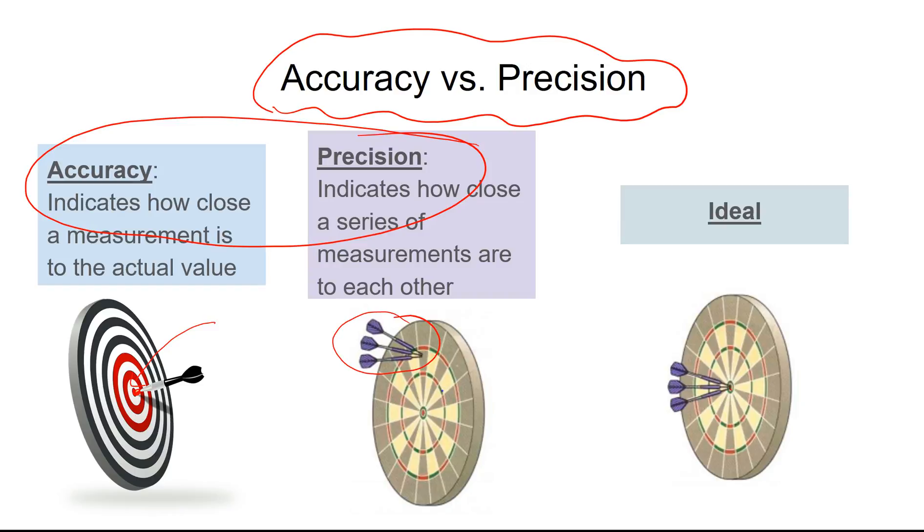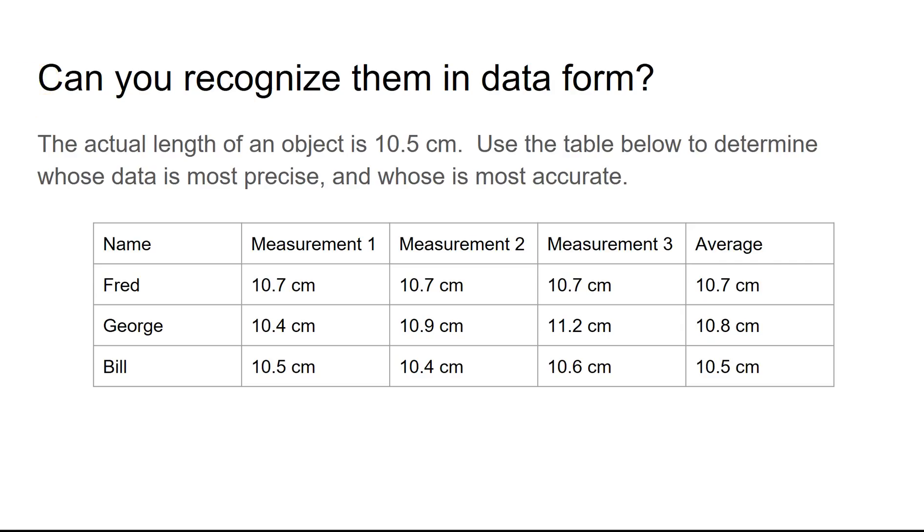So let's look at this with some data. Let's look at some actual numerical data, and let's see if we can pick out which indicates accuracy, which indicates precision. So we've got Fred, George, and Bill here. Each of them measured an object in its length, the actual length. So we know that the length of that object was measured by a professional or something like that. It would be 10.5 centimeters. Let's say Fred measures that three times. The first time, he gets 10.7 centimeters each time, for an average of 10.7. So George comes along, he measures it at 10.4, then 10.9, and then 11.2, coming out with an average of 10.8. And Bill measures it at 10.5, 10.4, 10.6 for an average of 10.5.